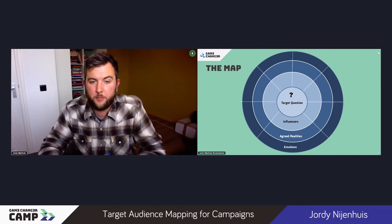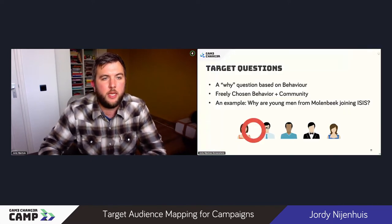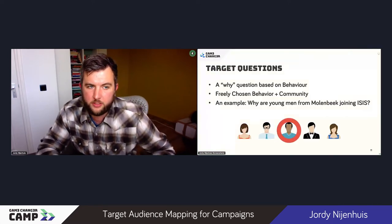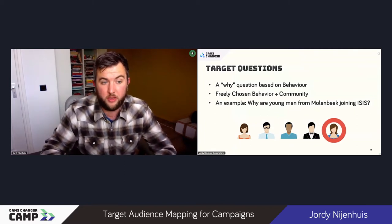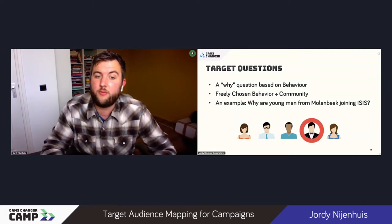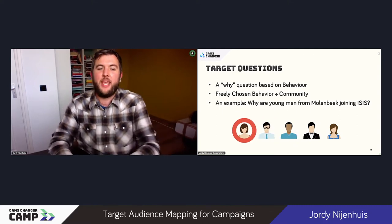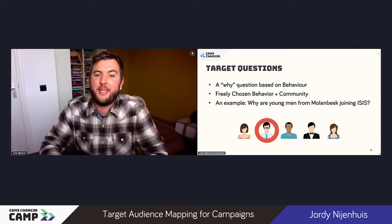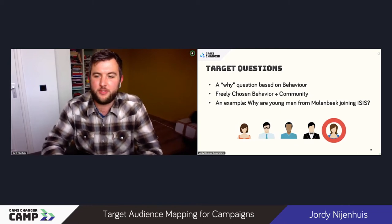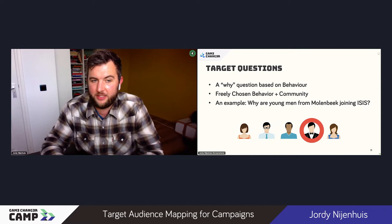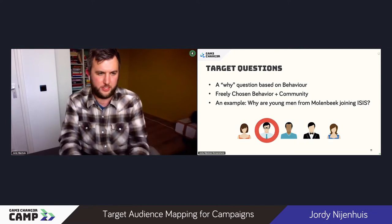The map always starts in the middle with a target question. The target question is formulated with a 'why' question based on behavior. Then you add freely chosen behavior plus a community. It sounds a bit scary, but it's simple — it's just adding the right ingredients to this question.